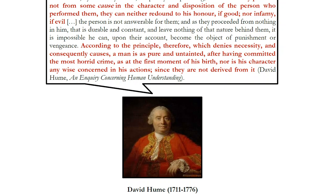When we praise someone for giving to charity, we're not primarily just praising this one action, which could be a one-off event — we're supposing it is a result of the generous character they have built. Our very idea of moral responsibility requires us to think that our actions are caused by our characters, and our characters are caused by a long string of causes going back into the past. So one of the things compatibilists will say is that if you want moral responsibility, we actually need determinism — we need to think that our actions are caused by our characters, by how we think, by the values we hold.